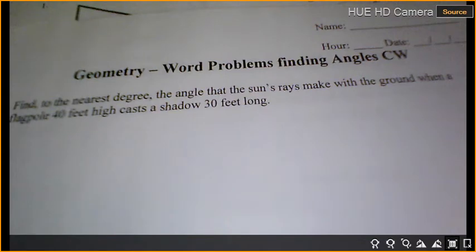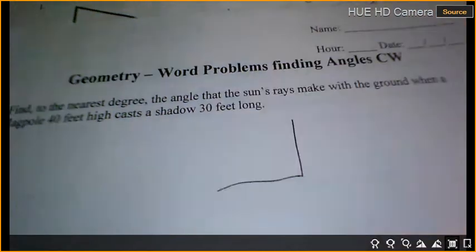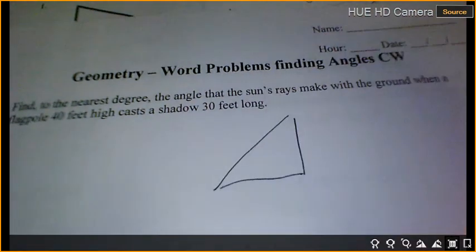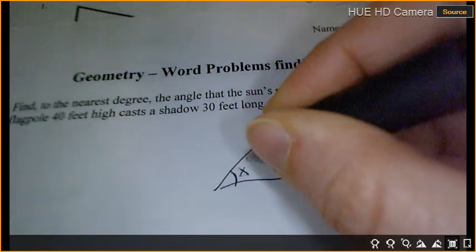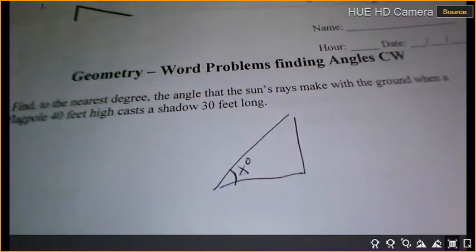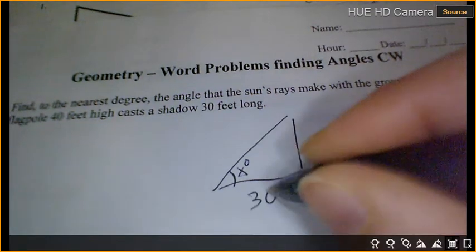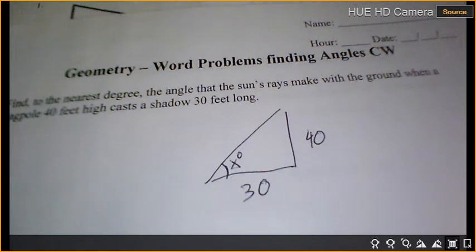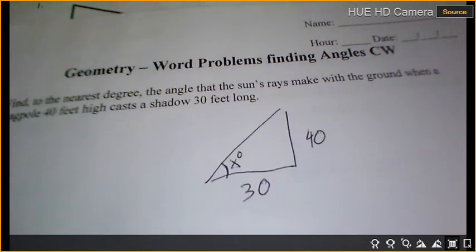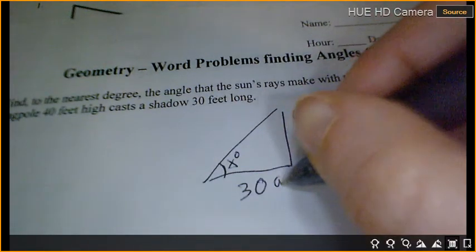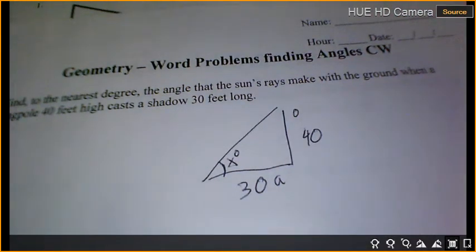We're going to find to the nearest degree the angle that the sun ray makes with the ground. When a flagpole 40 feet high casts a shadow 30 feet long. So we want to know the degree that it makes with the ground. So we're looking for this degree right here. We know the flagpole is 40 feet high and we know the shadow is 30 feet long. Shadows go on the ground. So 40 is the opposite adjacent or hypotenuse. 30 is the? So which trig function am I using? Tan.